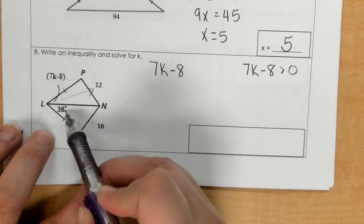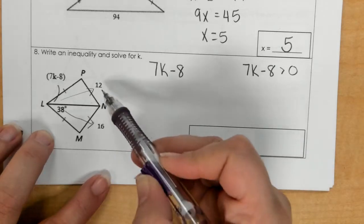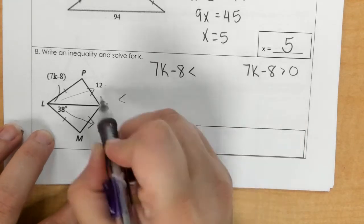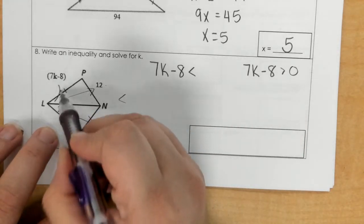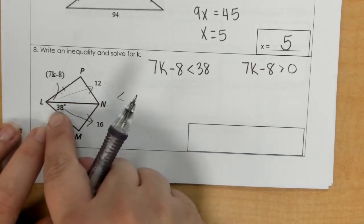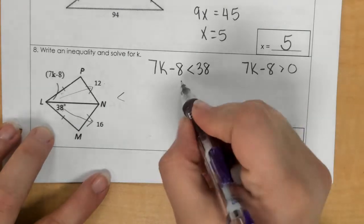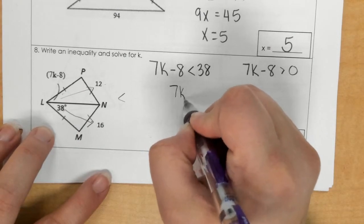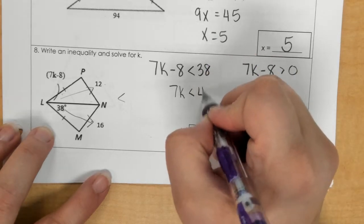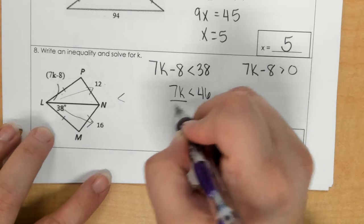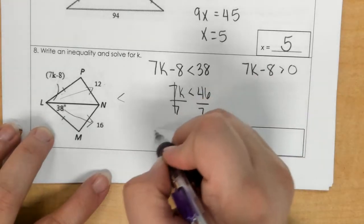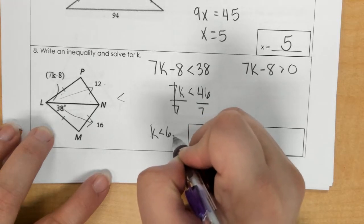For the next one, I look at the 12 and the 16, and I see that 12 is less than 16, so I would use less than, but I'm comparing angles, so I have to go to 38. So this angle measurement compared to this angle measurement. So I solve, and we get, what is that, 46. And if I divide by 7, we see that that will be a decimal, and it ends up coming out to 6.5.